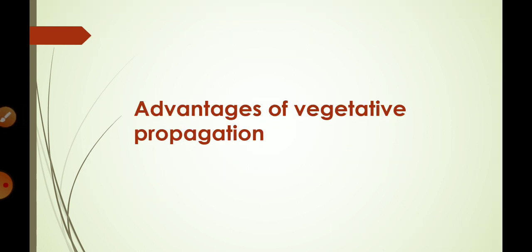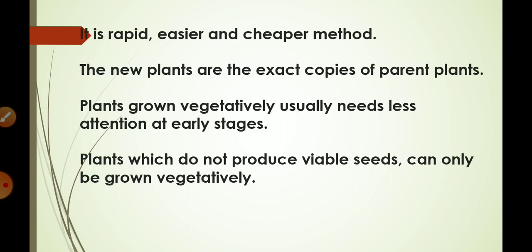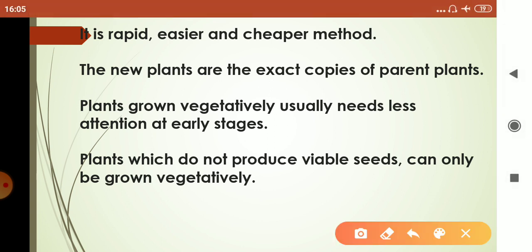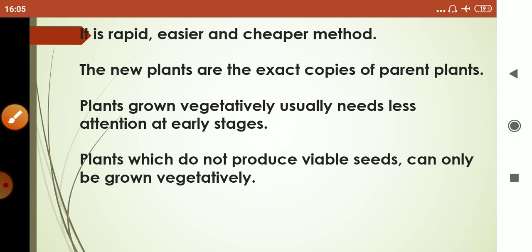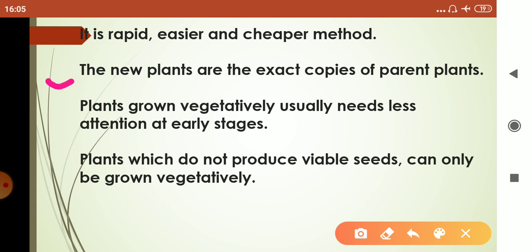Now let's look at the advantages of vegetative propagation. Compared to sexual reproduction, vegetative propagation is a rapid, easier, and cheaper method. In sexual reproduction, seed formation occurs and it takes a lot of time for a seed to grow and develop into a new plant. Therefore vegetative propagation is considered an easier method.